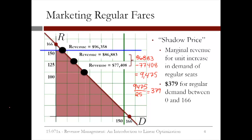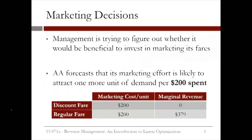So the marginal revenue for every extra unit of regular demand from 100 to 166 is $379. Given this analysis, how can we help the marketing department make their decisions? The forecast was an extra unit of demand for every $200 spent. For discount fares, this isn't worth it since the shadow price, or marginal revenue, is zero. But for the regular fares, this is worth it since the shadow price is $379. So the marketing department should invest in marketing regular fares to increase the demand by 66 units.